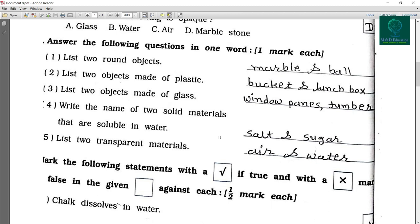Answer the following questions in one word. List two round objects. So marble and ball, orange you can write also. List two objects made of plastic. So bucket or lunchbox.